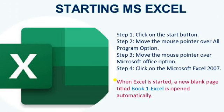Now, how to start the MS Excel sheet? Click on the Start button, then move your pointer over the Programs option, open the Microsoft Office option, and click on Microsoft Office Excel. This applies to the 2007 version. To open Excel in 2010, click on the Start button, click on Microsoft Office, and then select Microsoft Excel. You can then open a new workbook. When Excel is started, a new blank page is titled Book 1 and is opened automatically.